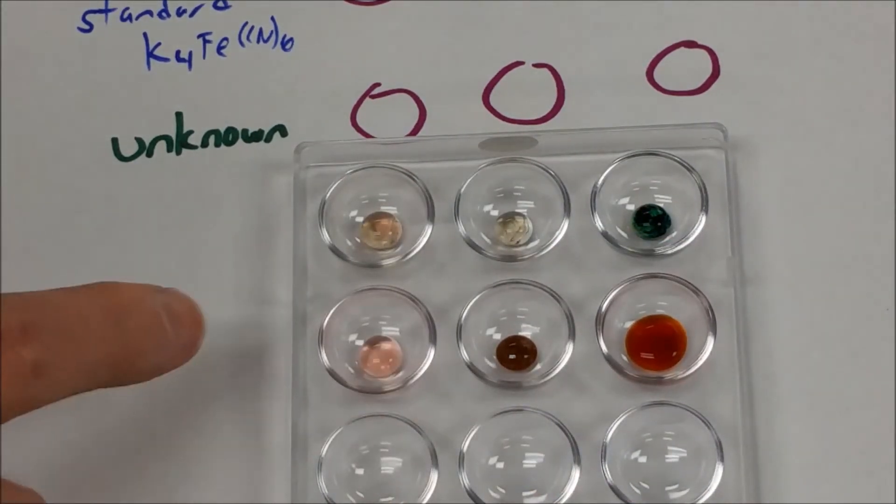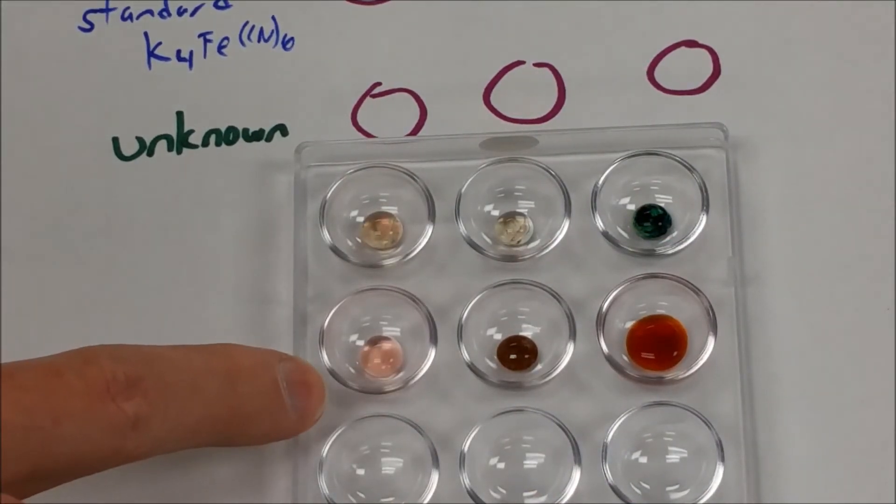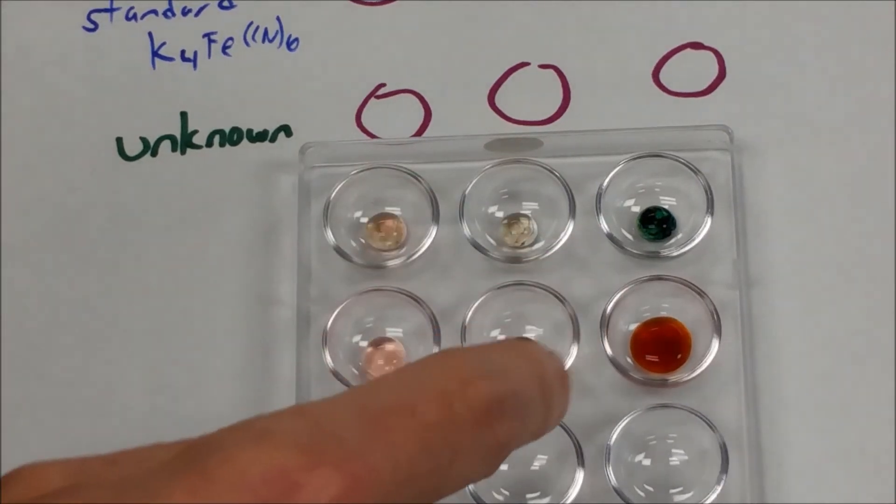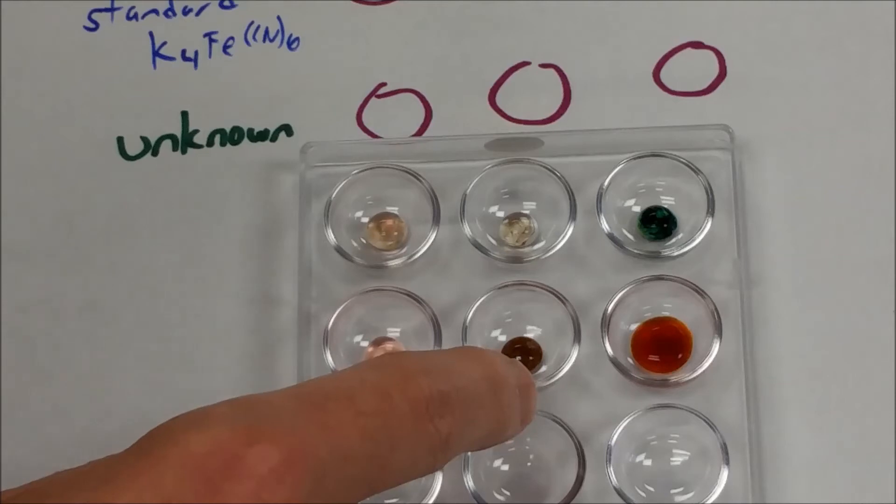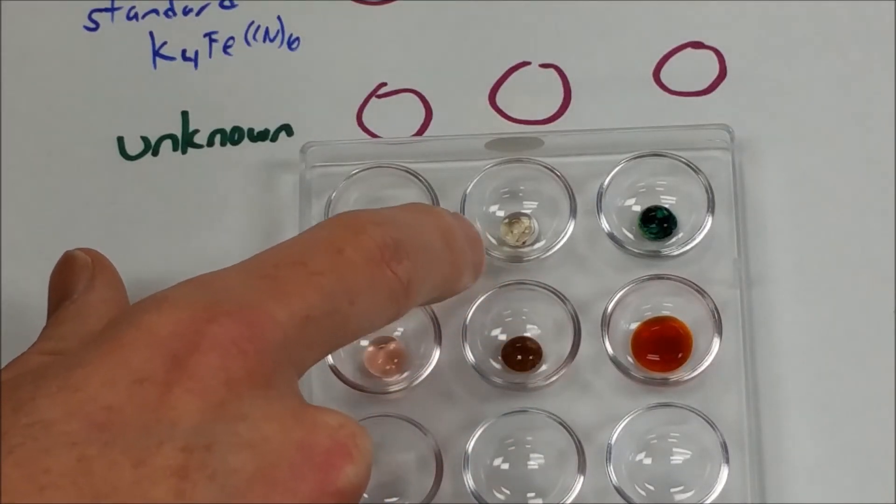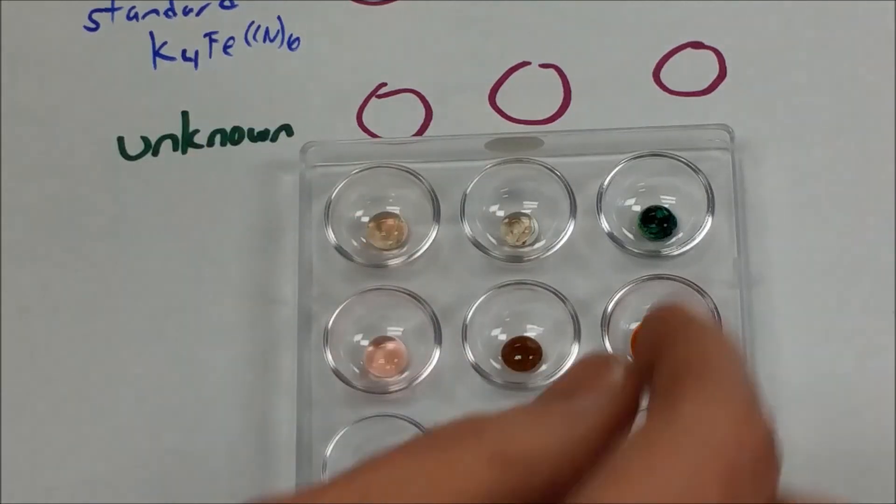But they're clearly different between each one. This one is just kind of staying the pink color, and this one's formed some kind of precipitate that's removed the color. This one has kind of a brownish color to it, and this one we've got some kind of fibrous red stuff, and then it's kind of like a pale cream colored drop.